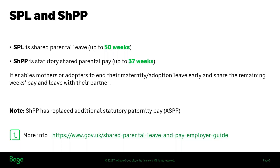SHPP is an entitlement of up to 37 weeks of paid leave that can be shared with either the partner or the mother or main adopter. This is a more flexible scheme that replaced the additional statutory paternity pay that was available up until April 2015. There's some good information available on how this works in the Employer's Guide from HMRC, and you can follow the link on screen if you wanted to read up more on that.